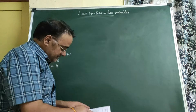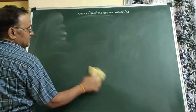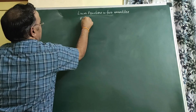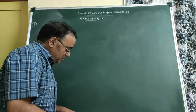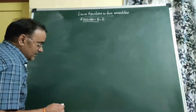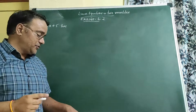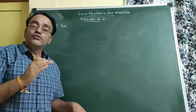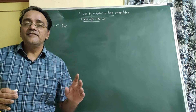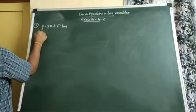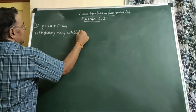Now we move towards exercise 4.2, question number 1: which one of the following options is true and why? For y = 3x + 5, the options are: unique solution, only two solutions, or infinitely many solutions. Since this is a linear equation in two variables, and a linear equation in two variables has infinitely many solutions, the correct option is (c): infinitely many solutions.